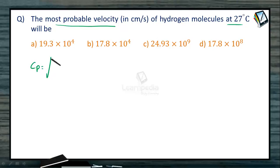It is Cp equals root over 8RT by pi m. So this becomes 8 into, as we require the value in centimeters per second, our value needs to be in erg per second. So it is 8.314 into 10 power 7. Then temperature which is 27 plus 273, that is 300 Kelvin, divided by 3.14 and the molecular mass of hydrogen is equal to 2.